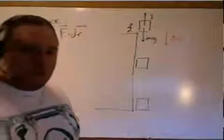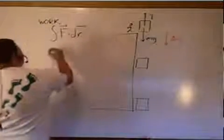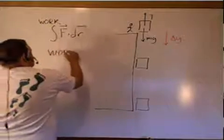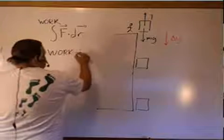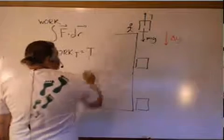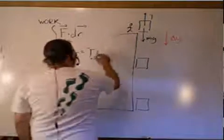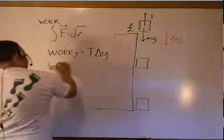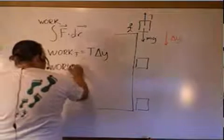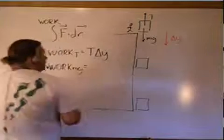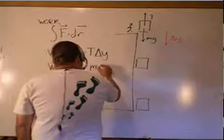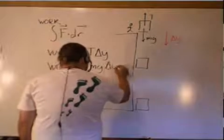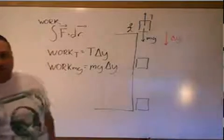Looking at the work being done on the elevator: the work done by tension is going to be equal to the force of tension times the change in displacement. And the work done by gravity — the force of gravity — is going to be equal to the weight times the change in distance.